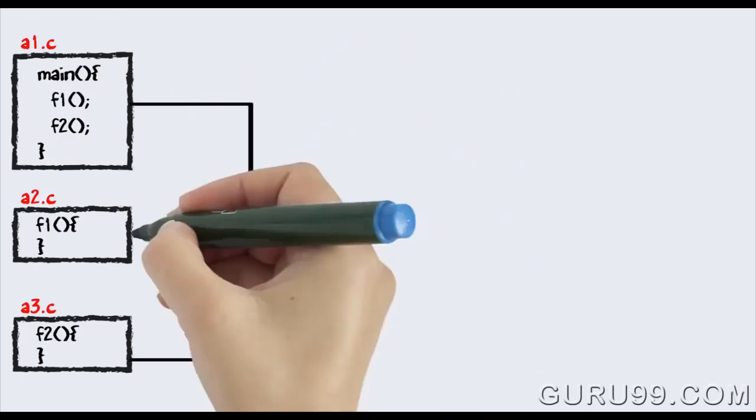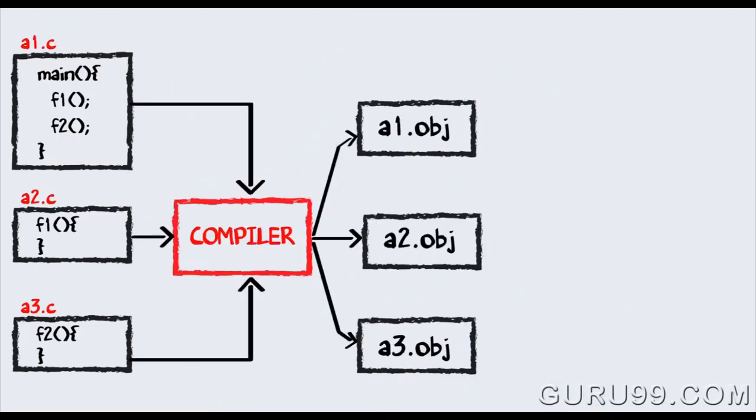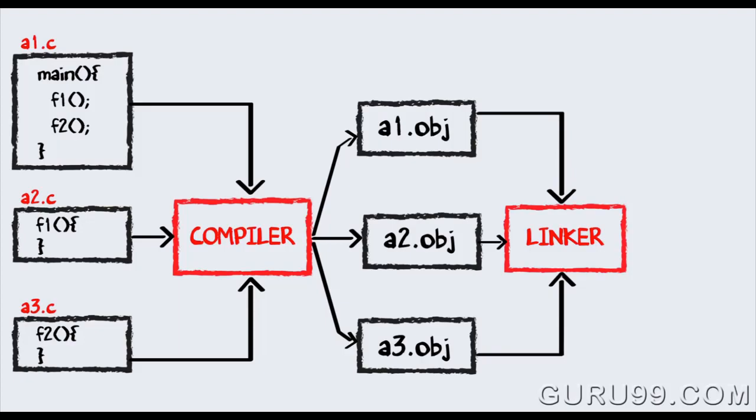All these files are fed to the compiler, whose output is the corresponding object files, which is the machine code. The linker will club these three files together and produce an .exe file.